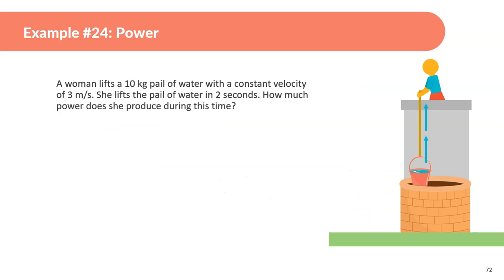A woman lifts a 10 kilogram pail of water with a constant velocity of 3 meters per second. She lifts a pail of water in 2 seconds. How much power does she produce during this time? She's going to be lifting this pail, it's 10 kilograms with constant velocity. So, that means the force applied has to be 10 times 10 which is 100 newtons. It has to be the opposite of force of gravity. We don't know what distance she goes up. However, we do know that she goes up with a velocity of 3 meters per second, and that it takes her 2 seconds. Let's use that to help us find the distance. We know velocity equals the displacement divided by time, and we're looking for displacement. Displacement equals velocity times time. So, velocity is 3 times 2. Now we know that the pail goes up 6 meters.